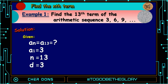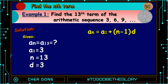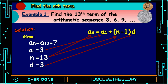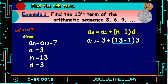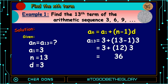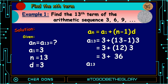Applying the formula: a sub n equals a sub 1 plus quantity n minus 1 multiplied by d. Substituting the values: 3 goes to a sub 1, 13 goes to n, and 3 goes to d. A sub 13 equals 3 plus quantity 13 minus 1, that is 12 multiplied by 3, which equals 36. So we have 3 plus 36, and a sub 13 equals 39.